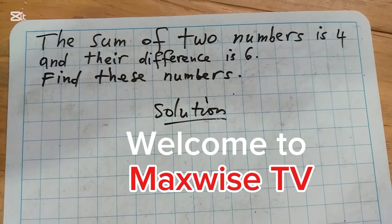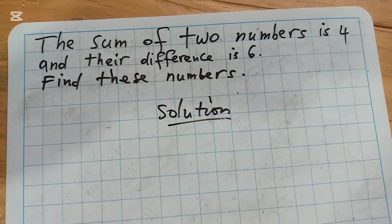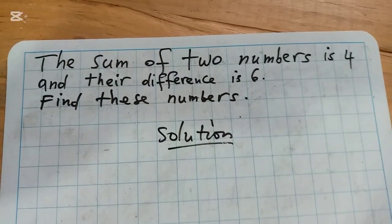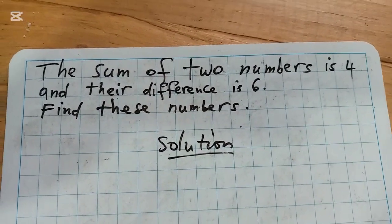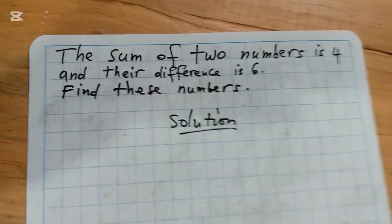The sum of two numbers is 4 and their difference is 6. Find these two numbers.